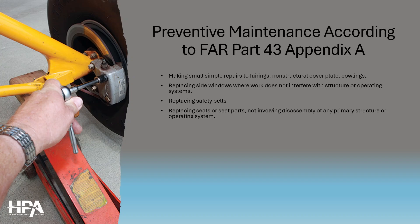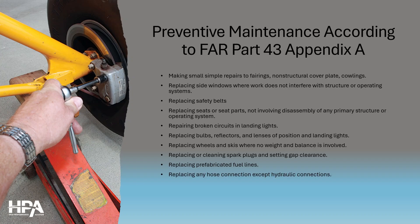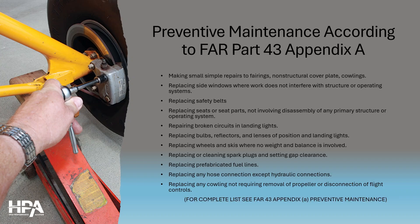You can replace side windows as long as it doesn't interfere with structure or operating systems, replace safety belts, replace seats or seat parts as long as disassembly doesn't include primary structure or operating system, repair broken circuits in landing lights, replace bulbs, reflectors and lenses of position and landing lights, replace wheels and skis where no weight and balance is involved, replace or clean spark plugs and set gap clearance, replace pre-fabricated fuel lines, replace any hose connection except hydraulic connections, and replace any cowling not requiring removal of the propeller or disconnection of flight controls. For a complete list, refer to FAR 43 Appendix A.